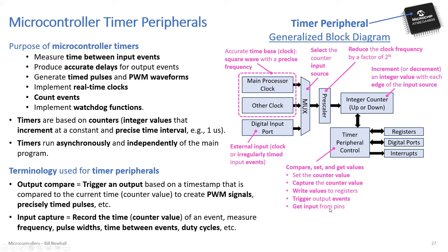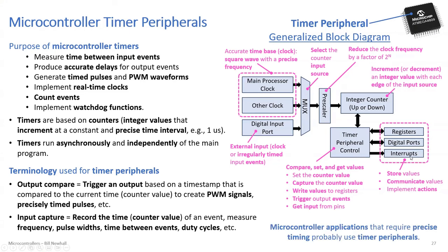The timer control also lets you trigger output events — like making a pin go digital high or low — based on a timer value, and receive inputs from digital pins. There are registers that communicate values to your program or the outside world. You can connect digital ports to the timer, and you can trigger interrupts based on timer values. This is essentially what timer peripherals do.